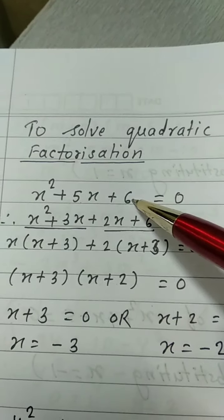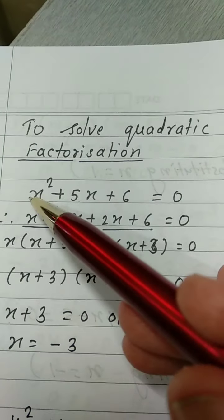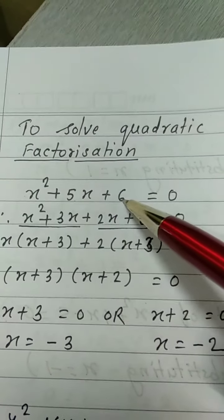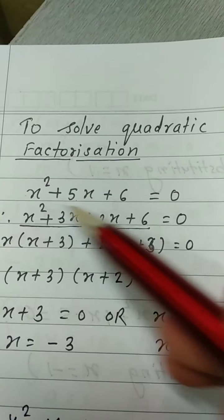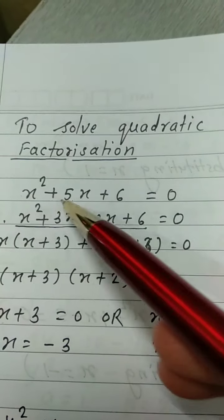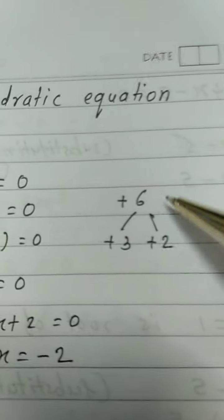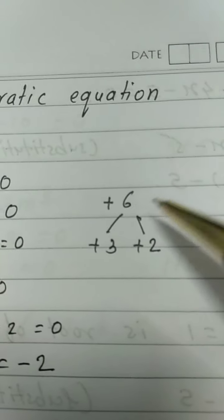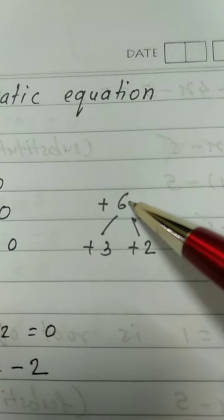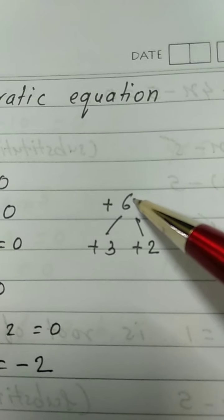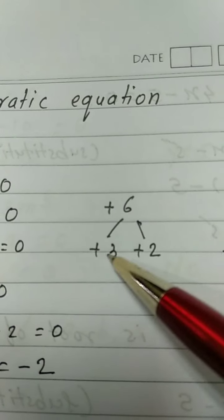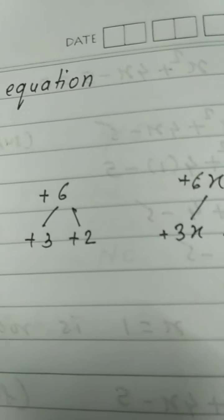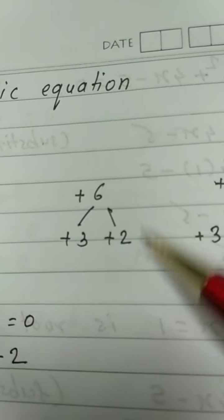See here: coefficient of x² is 1, so 6 × 1 = 6, and its addition should be 5. All are plus, so don't worry about finding the answer. 6 means 3 and 2, and 3 + 2 = 5.